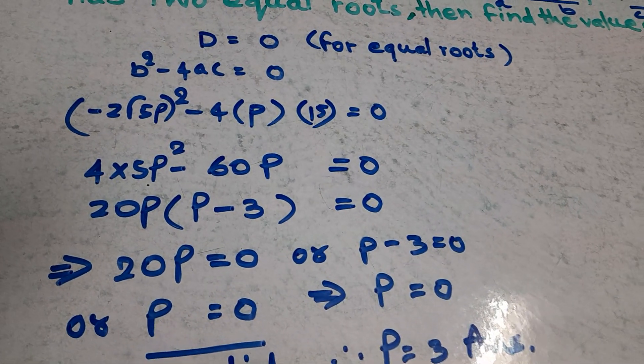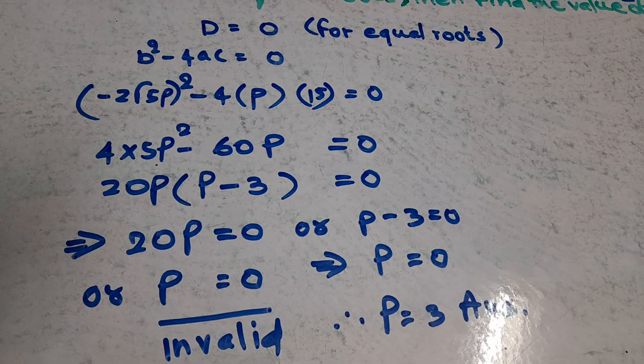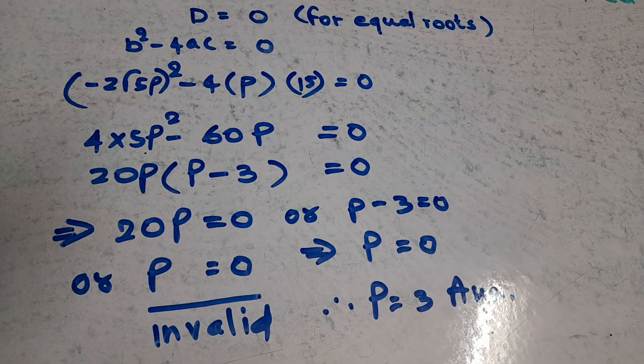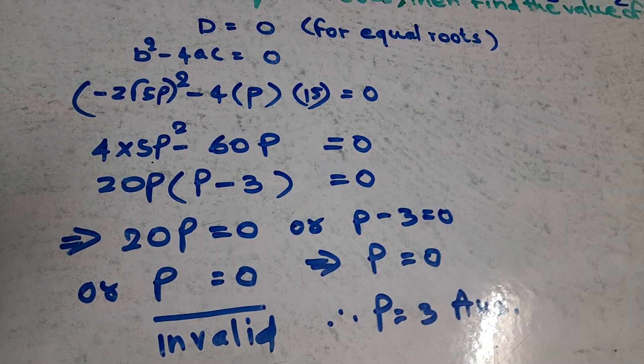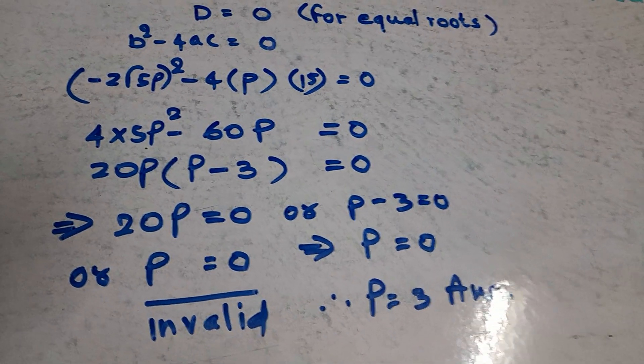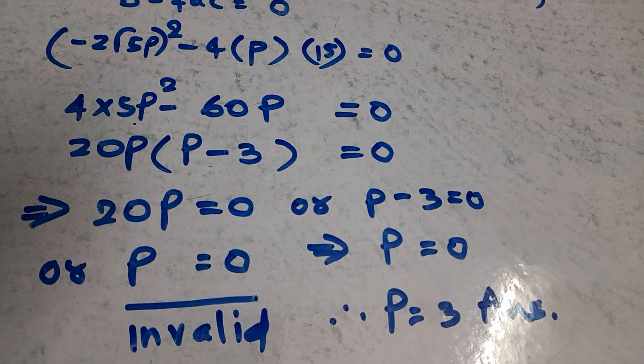If you square it, you get 4 times 5p squared minus 60p equals 0, which simplifies to 20p squared minus 60p equals 0.